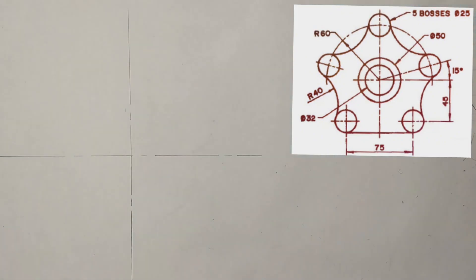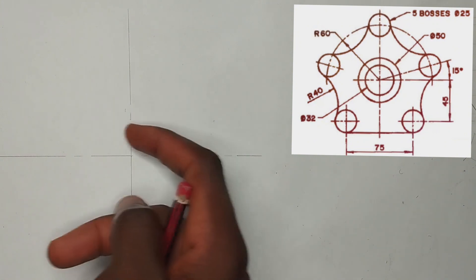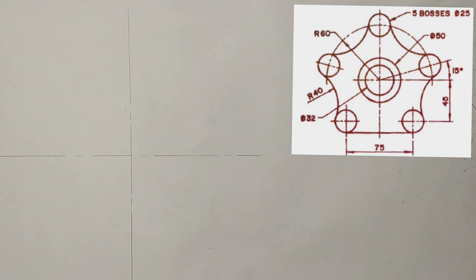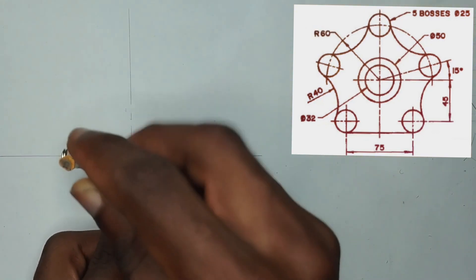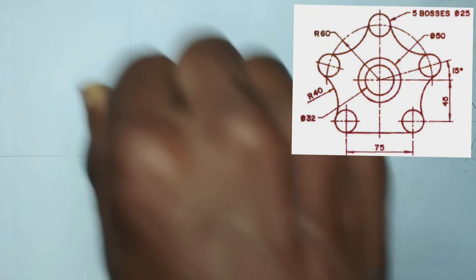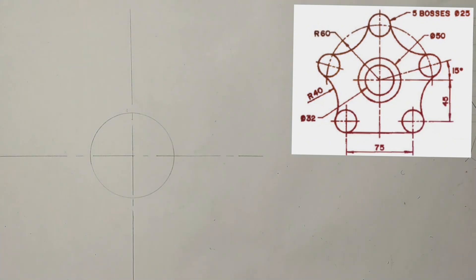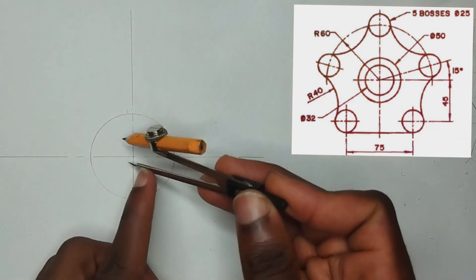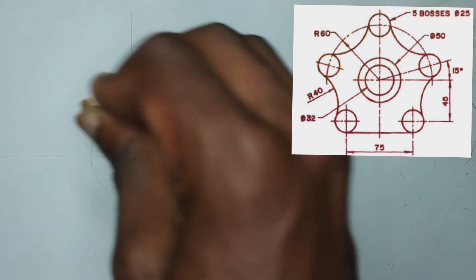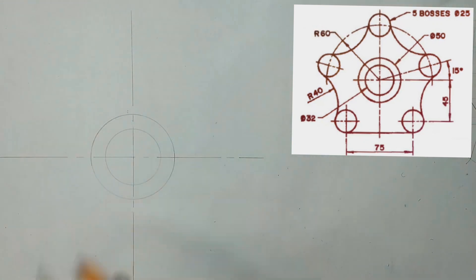Now I've been given a circle in the middle to be of diameter 50 millimeters — that is the bigger circle in the middle. I'm going to pick a radius of 25 millimeters on my compass, then placing it at the center, I'm going to draw the circle using thin lines. Then we have been given another smaller circle of diameter 32 millimeters, so that is a radius of 16. I'm going to pick 16 millimeters on my compass, place it at the center, then draw a circle.